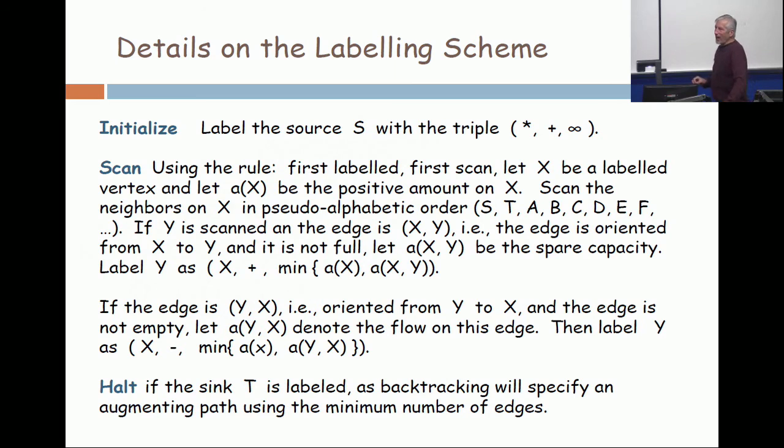And that's the triple. Any time I label the sink, I halt, and backtracking will specify an augmenting path using the minimum number of edges.